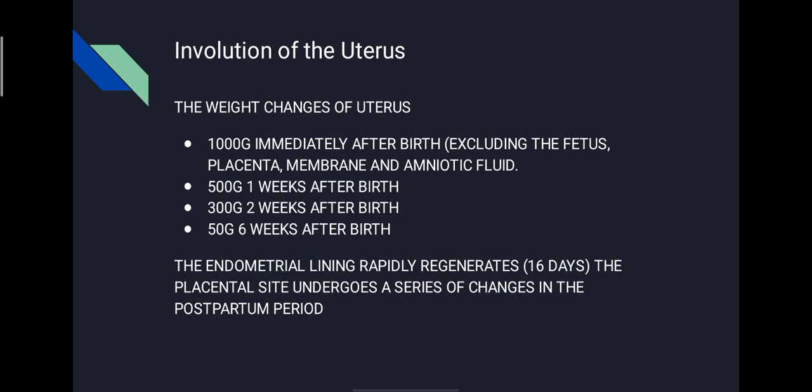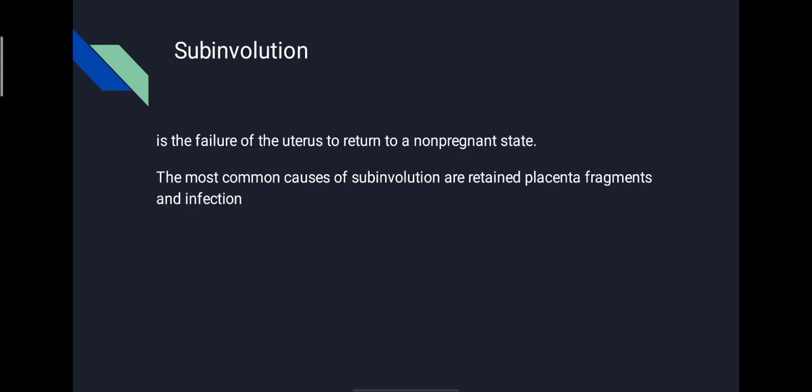The endometrial lining rapidly regenerates, which is completed by the 16th day, except at the placental site, which undergoes a series of changes in the postpartum period. Sub-involution is the failure of the uterus to return to a non-pregnant state. The common causes of sub-involution are retained placenta, placental polyps, and infection.